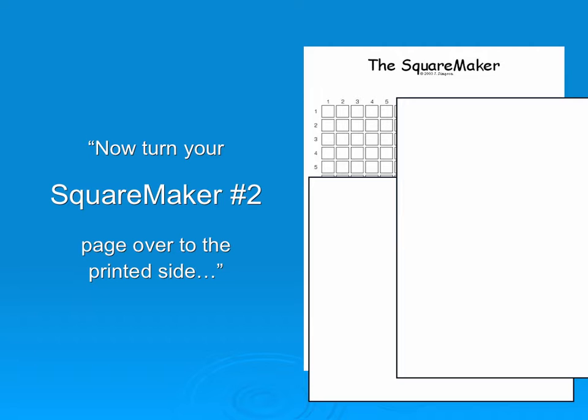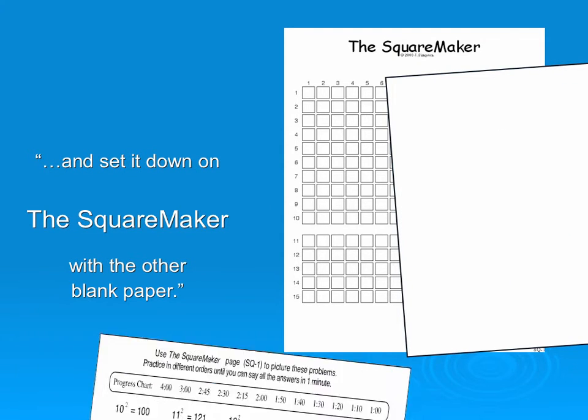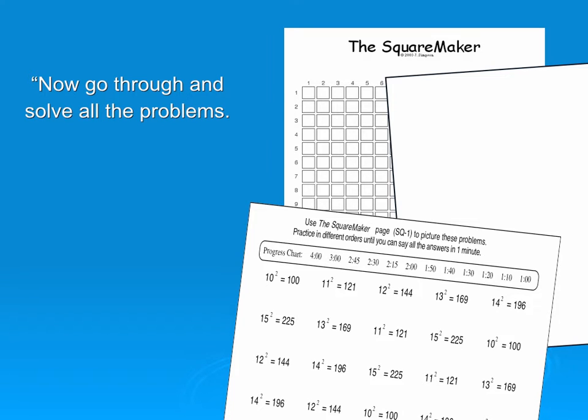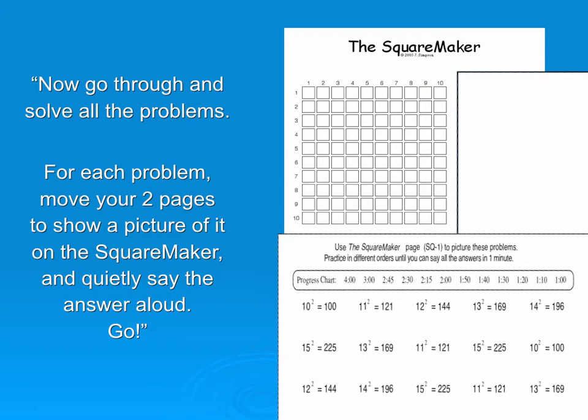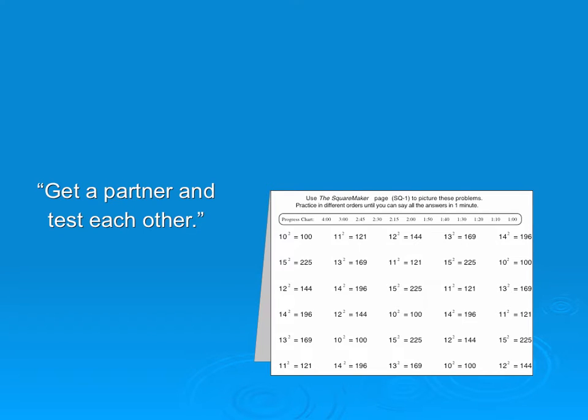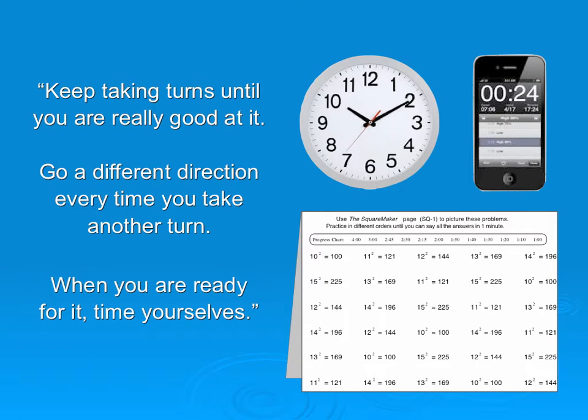Now turn your square maker number 2 page over to the printed side and fold it in half. And set it down on the square maker with the other blank paper. Now go through and solve all the problems. For each problem, move your two pages to show a picture of it on the square maker and quietly say the answer aloud. Go! Give them time to finish, and when they're done: Okay everybody, get a partner and test each other. Keep taking turns until you're really good at it, and be sure you go a different direction—like across or backwards, down or up. Go a different direction every time you take another turn. And when you're ready for it, time yourselves.